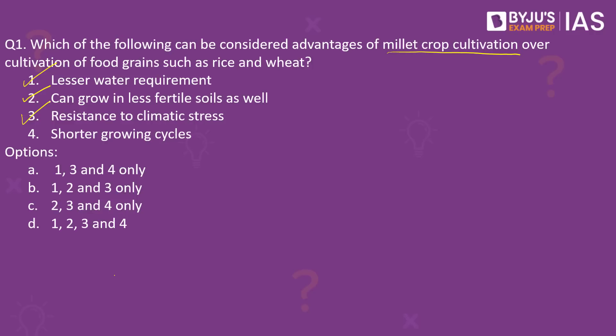The fourth statement is also correct — millets have shorter growing cycles compared to rice and wheat in most cases. Some millets can be harvested within 60 days, as against around 100 days for wheat and rice. Given these advantages, millets are being termed the crop of the future because of their potential to address climate change and food security. Hence, the answer to this question is Option D: 1, 2, 3 and 4.